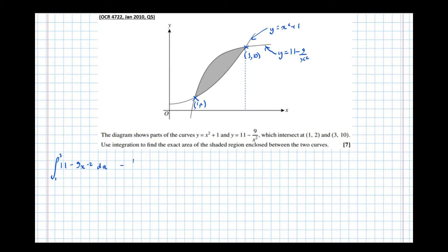Then we're going to take away the integral, again between 3 and 1, of the lower of the two curves, which is x squared plus 1 dx.